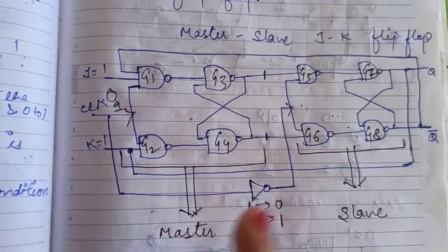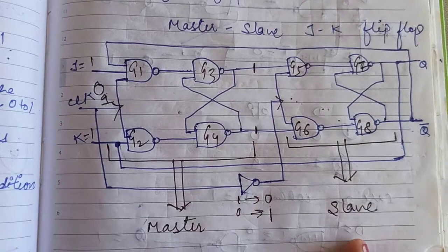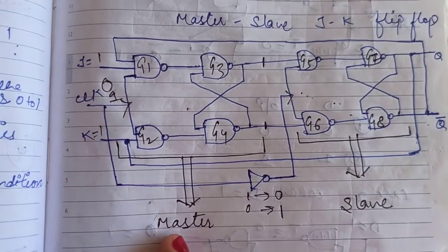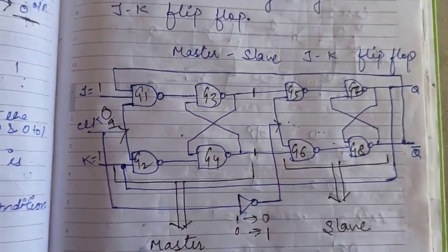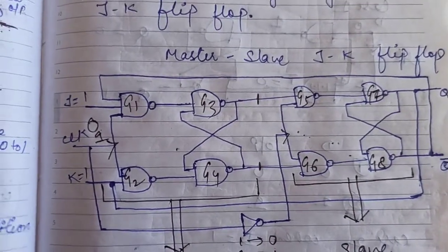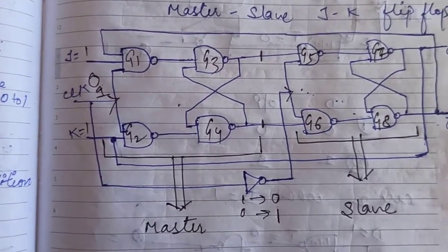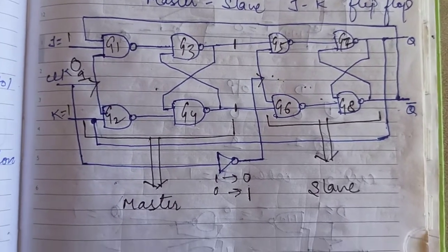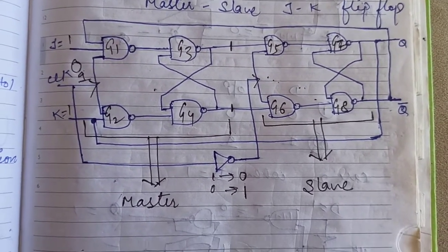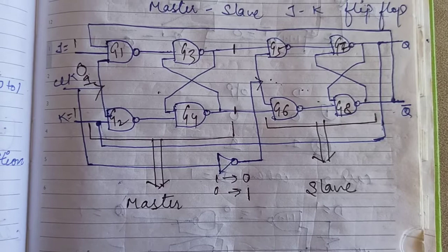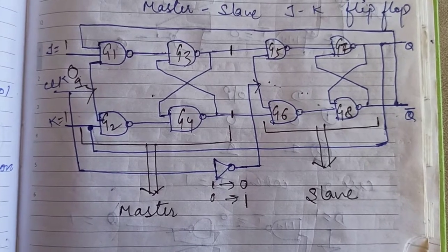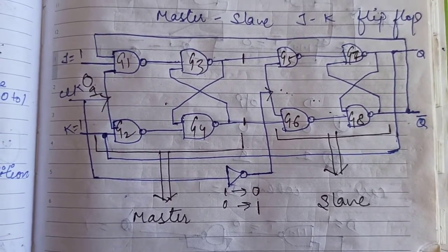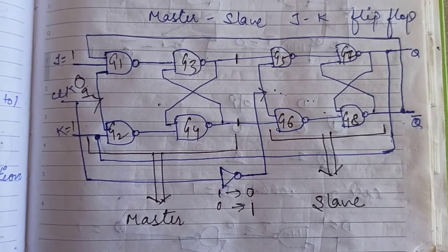You can see that when the master is active, the slave is inactive, and when the slave is active, the master is inactive. When you give clock pulse 1 to the master circuit, the master is active and the slave is inactive. The slave will not work and will not produce any output — only the master will produce the output.